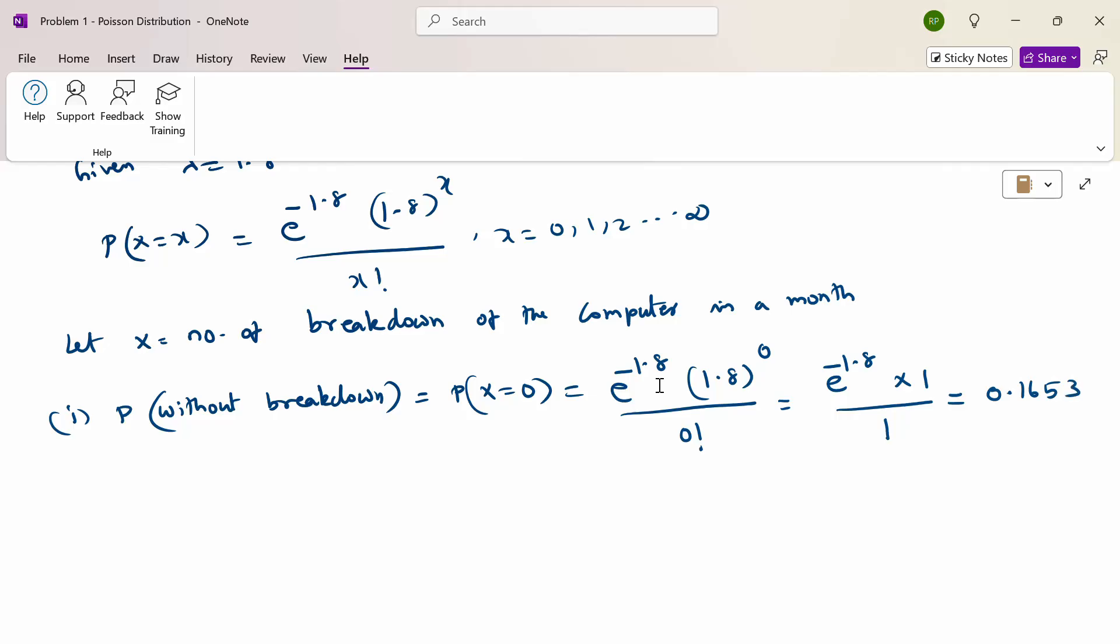Then what is the second question? Probability with only one breakdown. One breakdown means x equals 1. If x equals 1, then e power minus 1.8, 1.8 power 1 by 1 factorial.